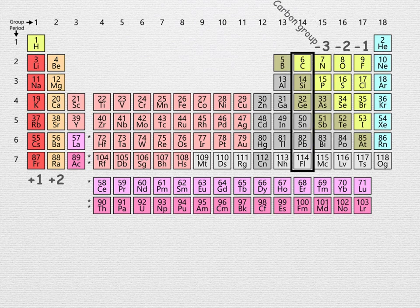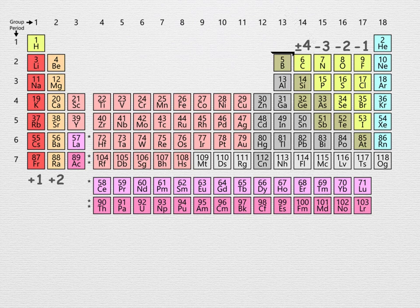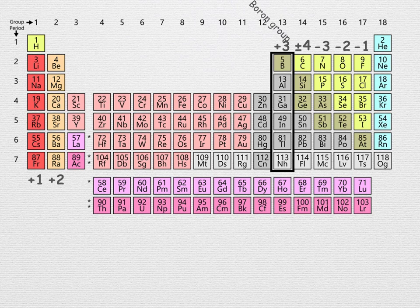In compounds, group 14 elements, the carbon group, have plus four and plus two oxidation states possible. Anionic-like species can also be formed, usually as a minus four state. In compounds, group 13 elements, the boron group, form plus three states with atoms near the top, also plus two near the middle, and plus one for the middle and bottom elements.